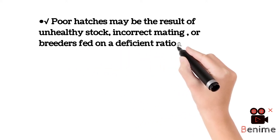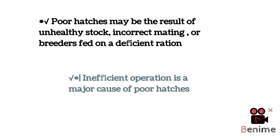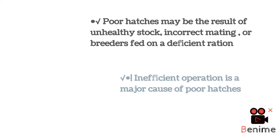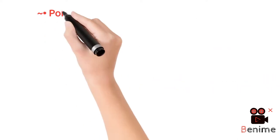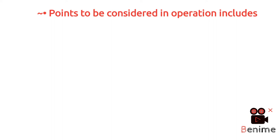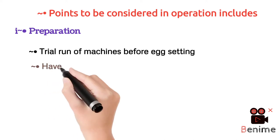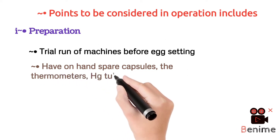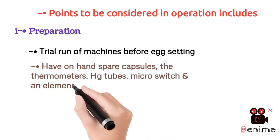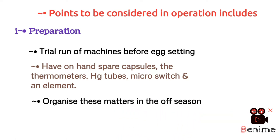Poor hatches of the eggs may be the result of unhealthy stock, incorrect mating, or breeders fed on a deficient ration. An inefficient incubator operation is a major cause of poor hatches, so the incubator should be operated strictly. Points to be considered include: first, preparation of the incubator or the site where incubation is to take place; a trial run of the machines before egg setting is very important. On hand, spare capsules, thermometers, mercury tubes, micro switches, and heating elements should be available in case of any instrument failure.